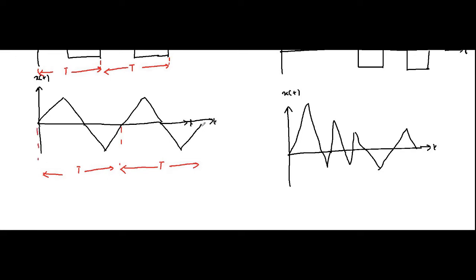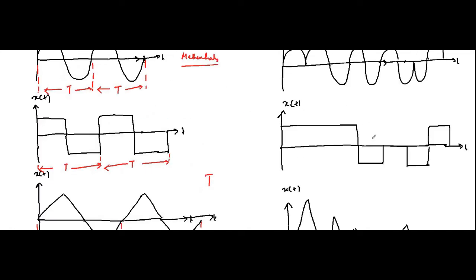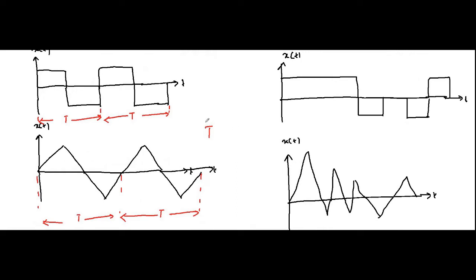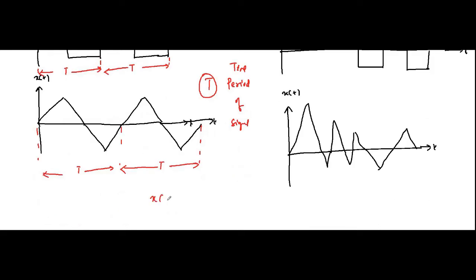This pattern repeats itself after a fixed interval of time — let's call it capital T. For non-periodic signals, no such fixed repeating pattern exists. This T, the duration after which the fixed pattern keeps on repeating, is called the time period of the signal. The basic expression of a periodic signal is: the value of the signal after that fixed time period equals the original value, i.e., x(t + T) = x(t).